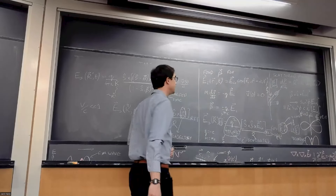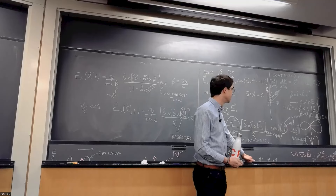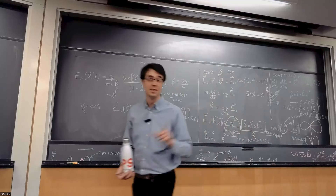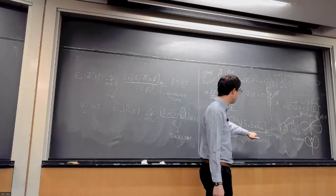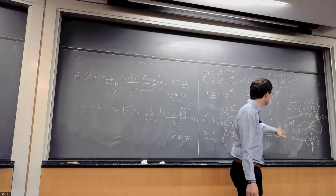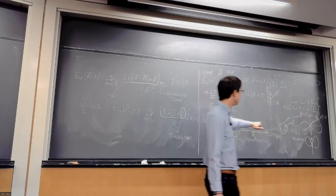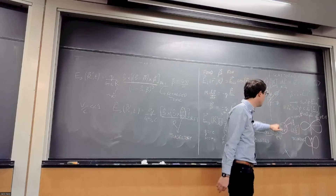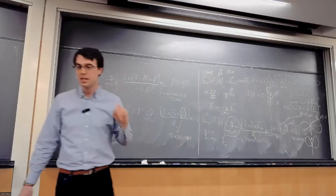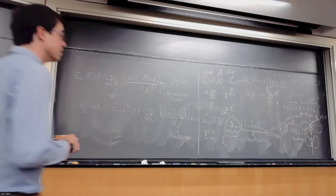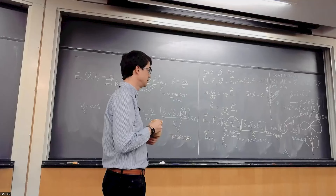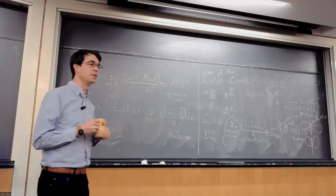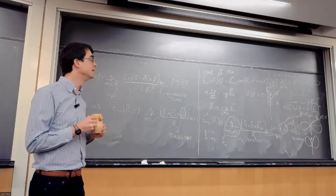Another quantity to calculate is the total cross-section. The differential cross-section is the probability of the scattering event happening — scattering a photon in a certain direction through solid angle dΩ_s — and it's equal to the scattered power divided by the incident power c · ε₀ · |E_i|². So now we just have something like r_e² · sin²(φ). The total probability of any scattering event happening is ∫ r_e² · sin²(φ) · dΩ, where dΩ = 2π · sin(φ) · dφ for a cylindrically symmetric system.